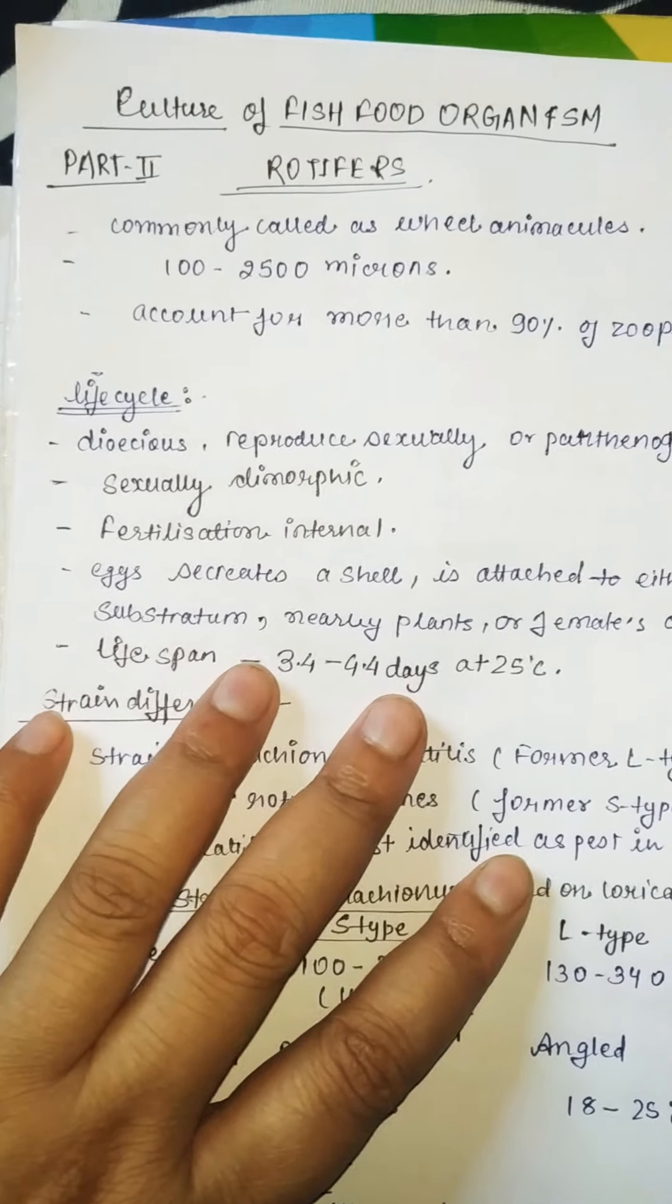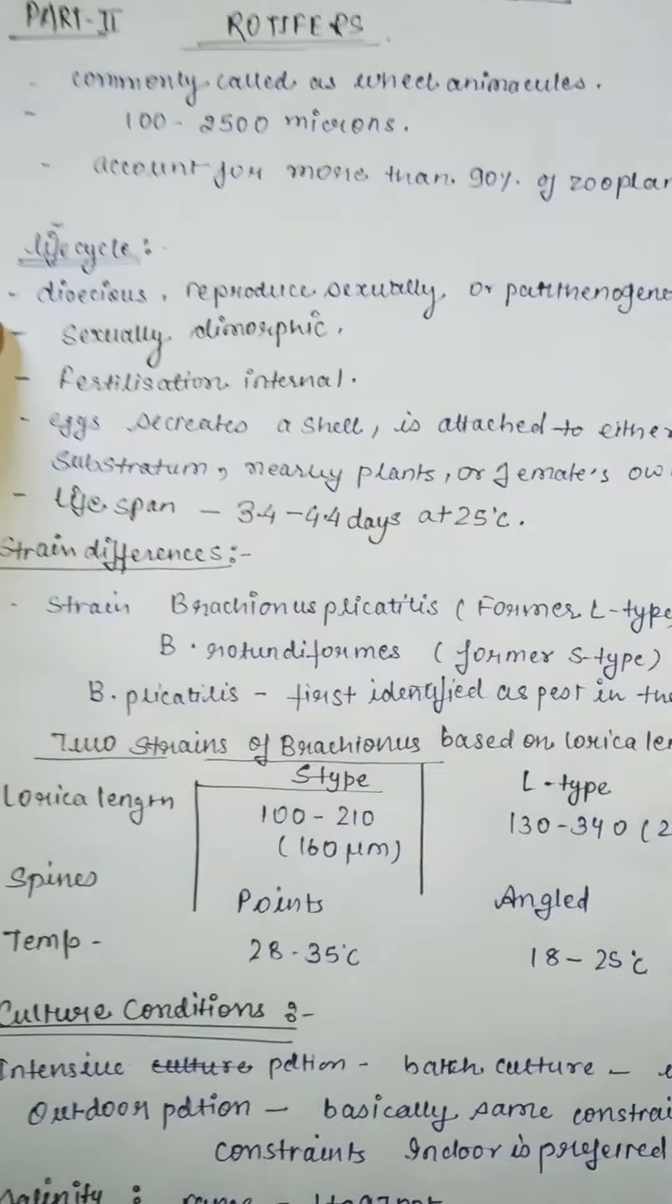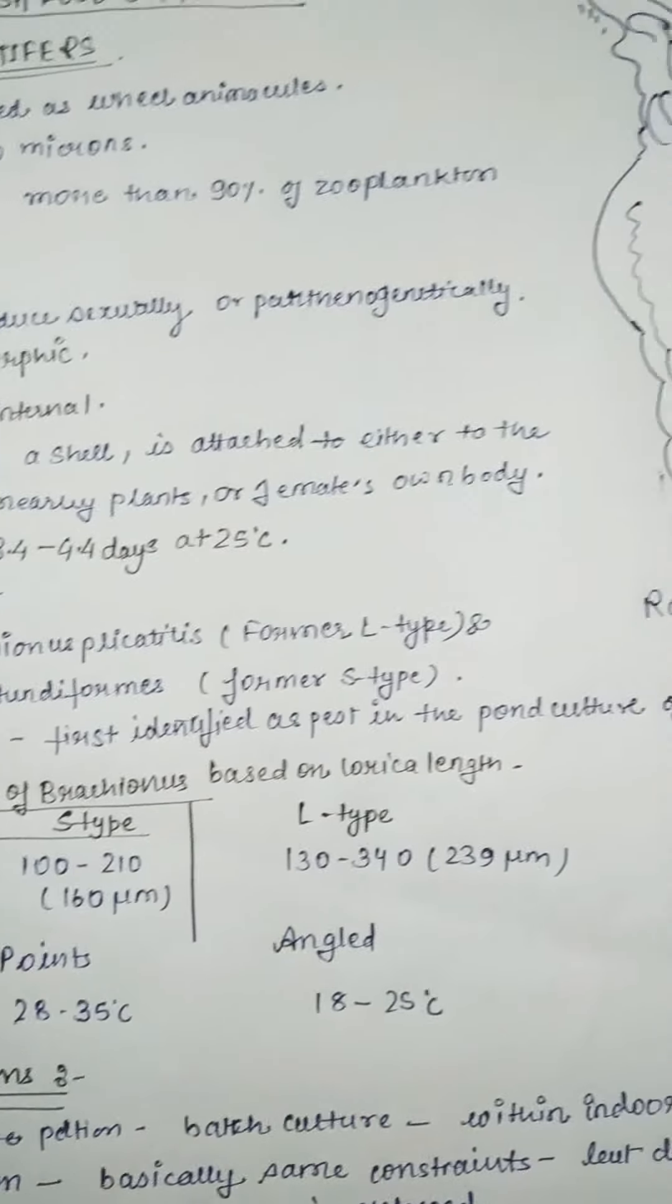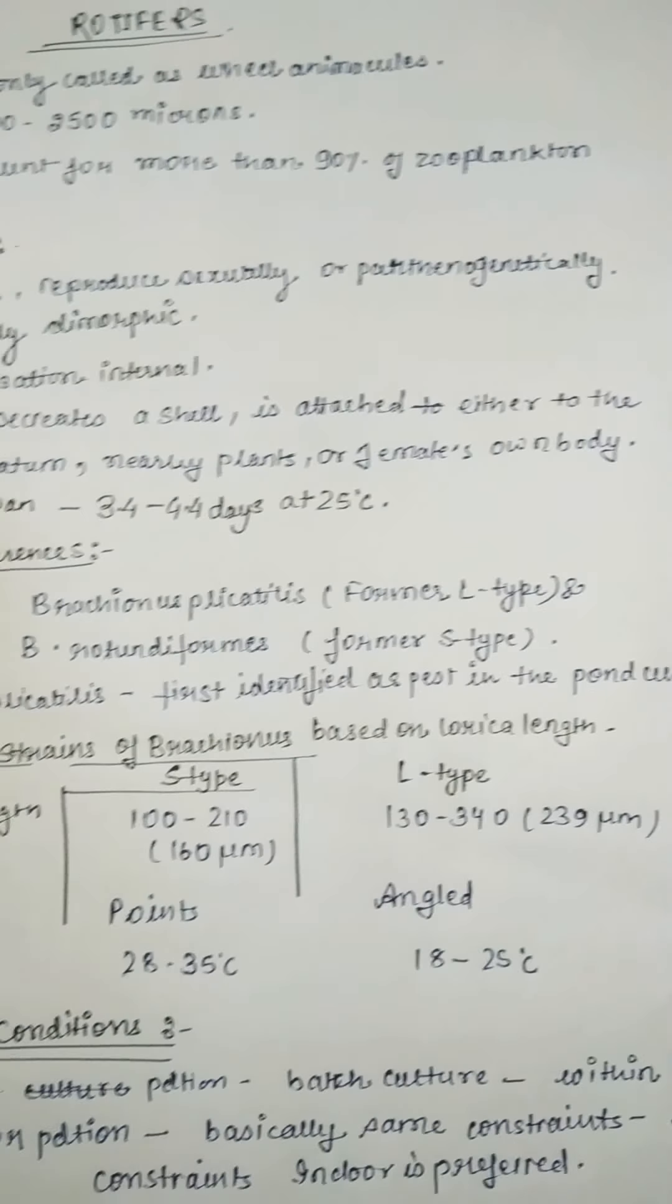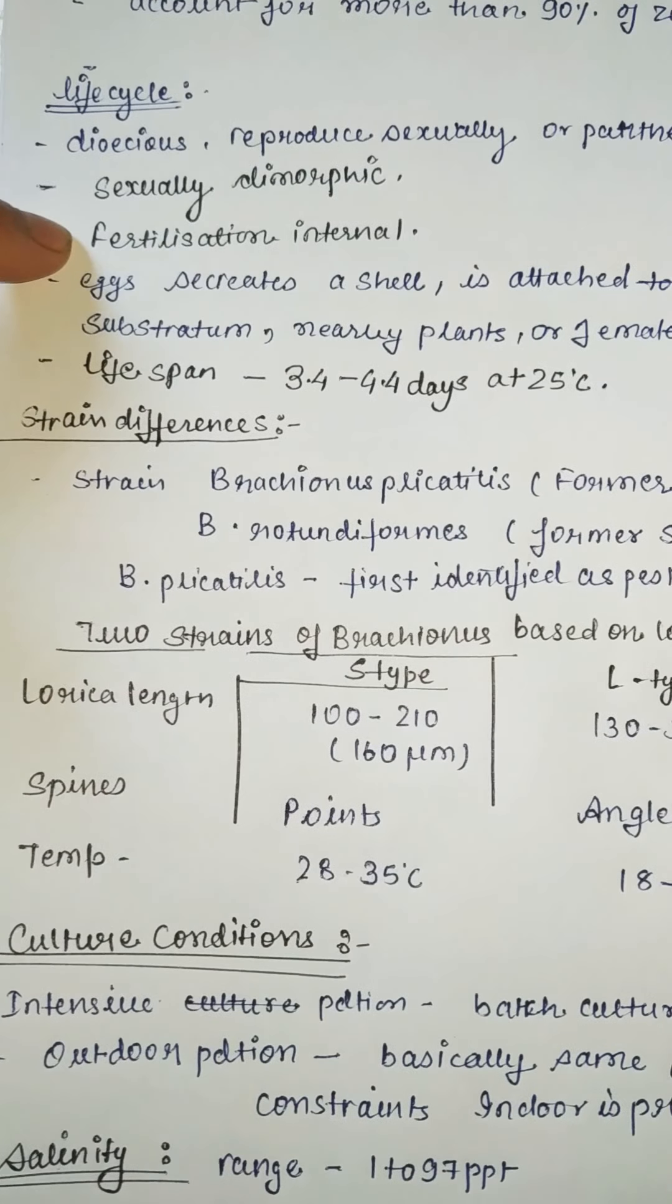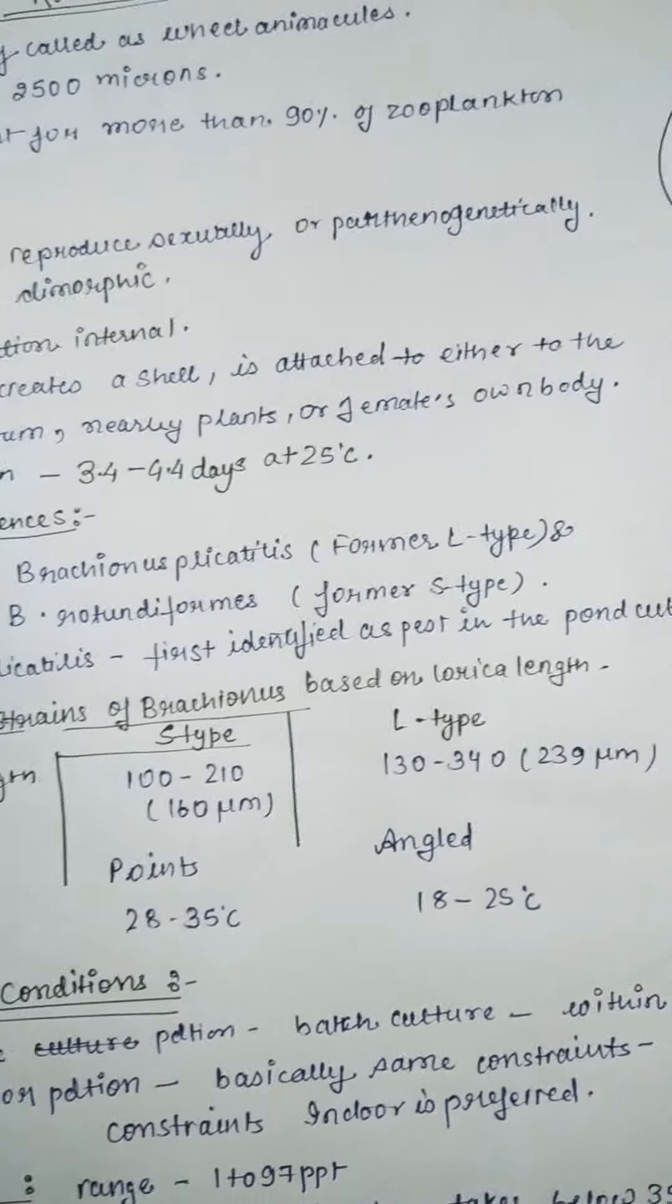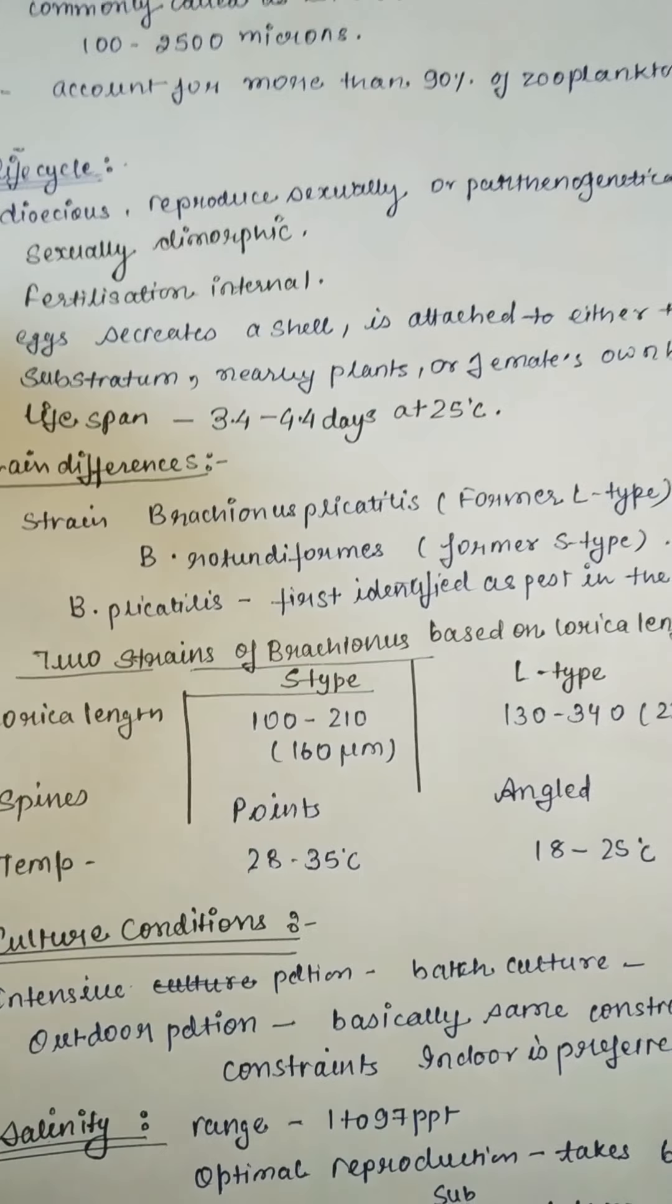Life cycle of rotifers: they are dioecious, meaning they reproduce sexually or parthenogenetically. They are sexually dimorphic. Fertilization is internal. Eggs secrete a shell and are attached either to the substratum, nearby plants, or the female's own body.